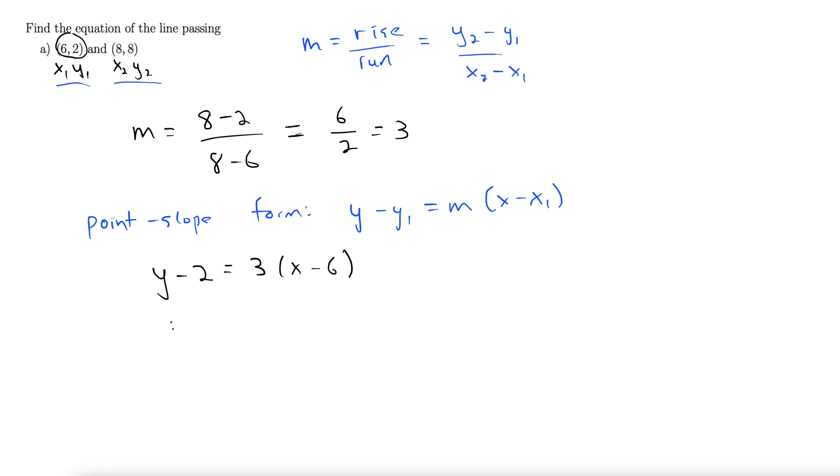Let's clean it up a little bit. Y minus 2 equals 3 times x minus 18. Add the 2 to both sides. Y equals 3x minus 16. This is our slope-intercept form.